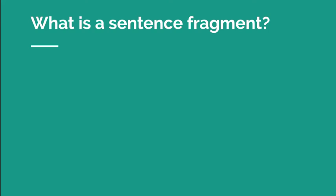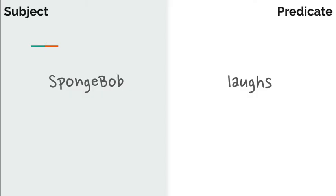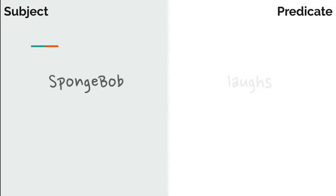What does a sentence need to be complete? Every complete sentence needs a subject and a predicate. So a sentence fragment is missing one or both of these things.